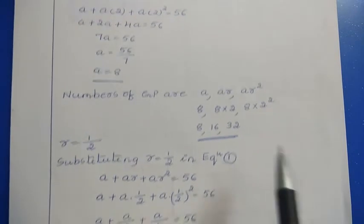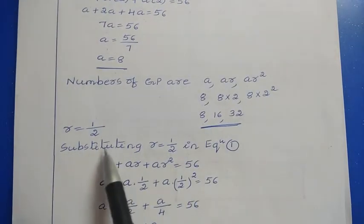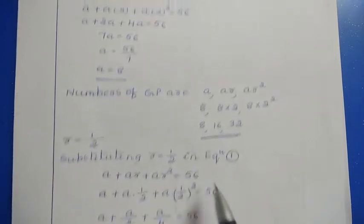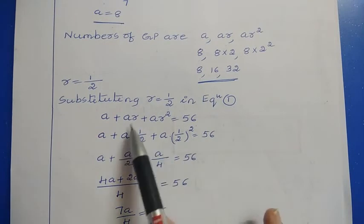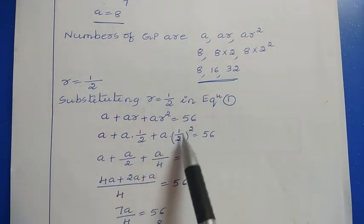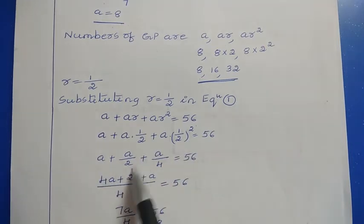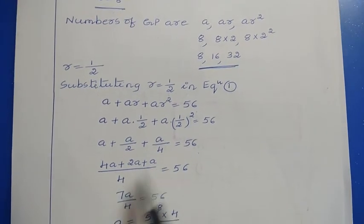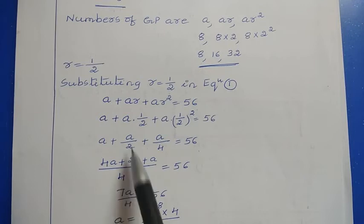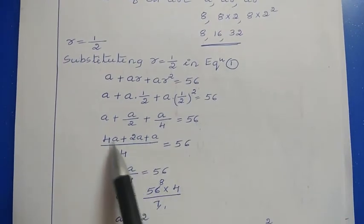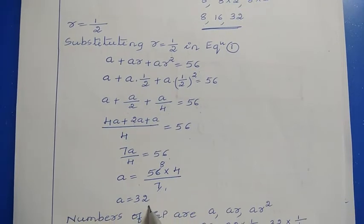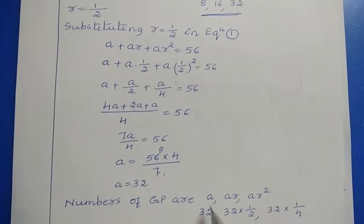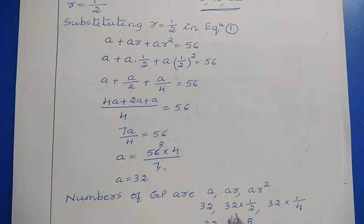For R equals 1/2, substituting in equation 1: A plus A/2 plus A/4 equals 56. Taking LCM as 4: (4A plus 2A plus A)/4 equals 56, so 7A/4 equals 56, giving A equals 32. The GP terms are 32, 32×(1/2), 32×(1/4) — that is 32, 16, and 8.